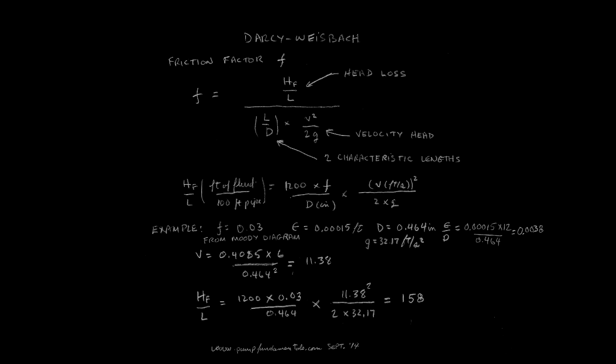L over d is a ratio of two important characteristics of the system. Let's put in 10 feet per second for v, 0.03 for f, and 0.464 for d. These values are the ones used in the previous pump and process video. The result is 156 feet per 100 feet of friction head loss.